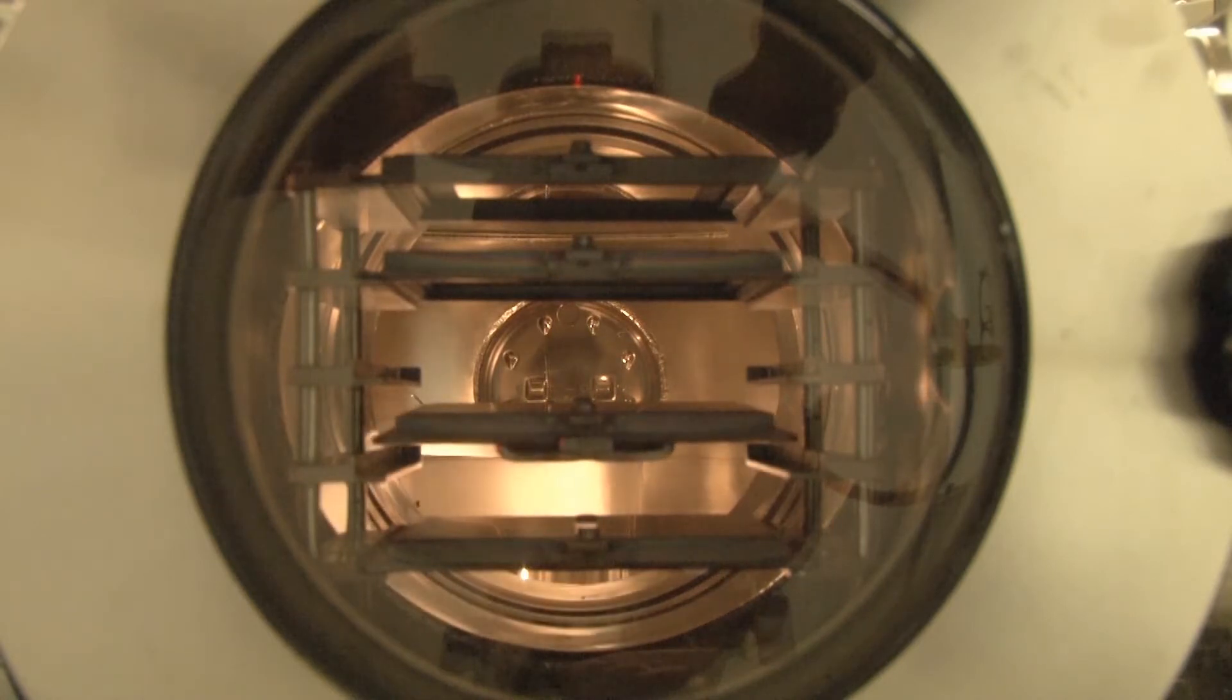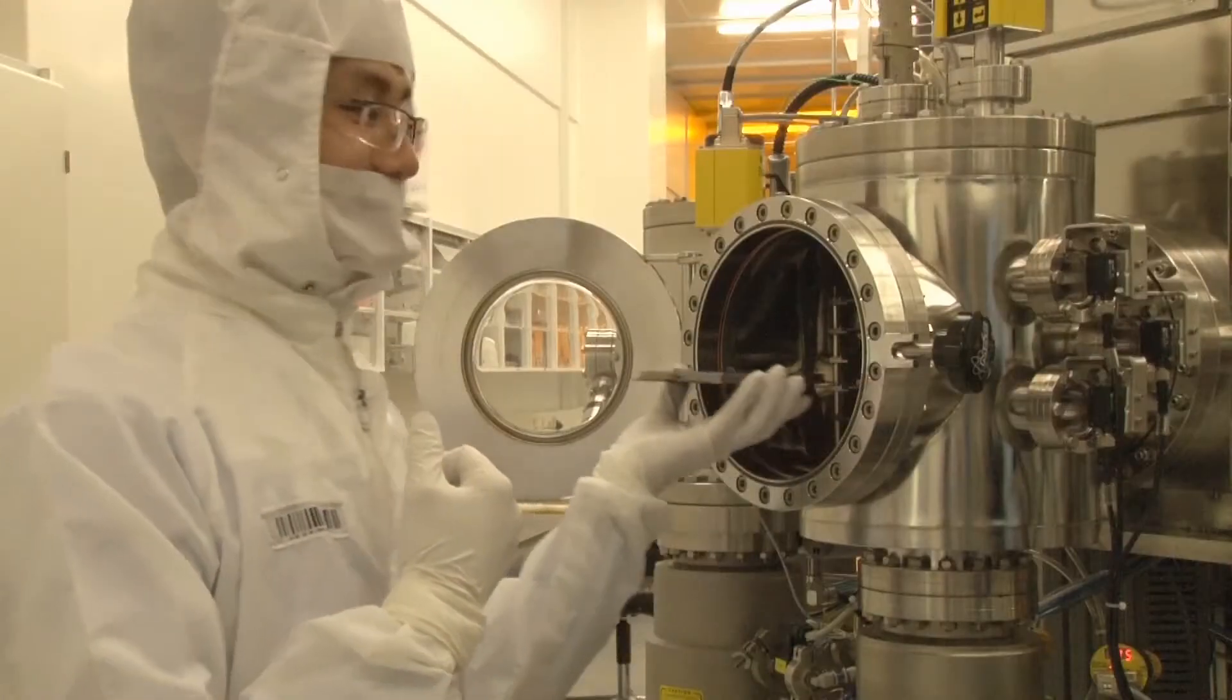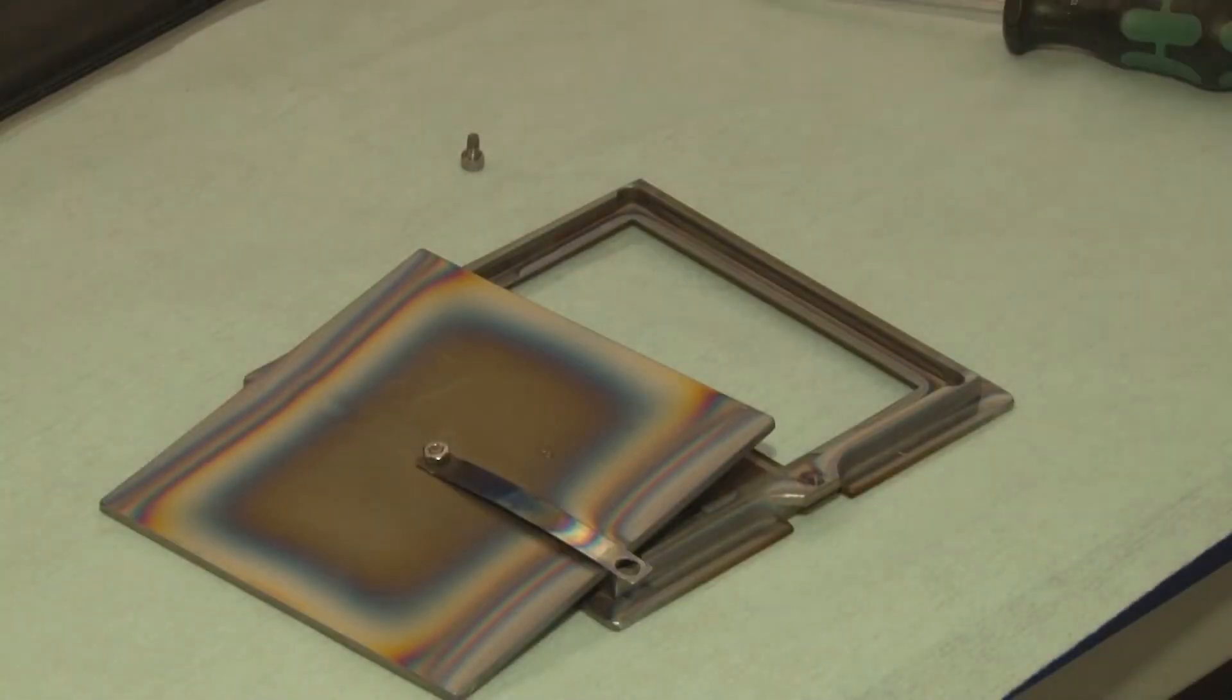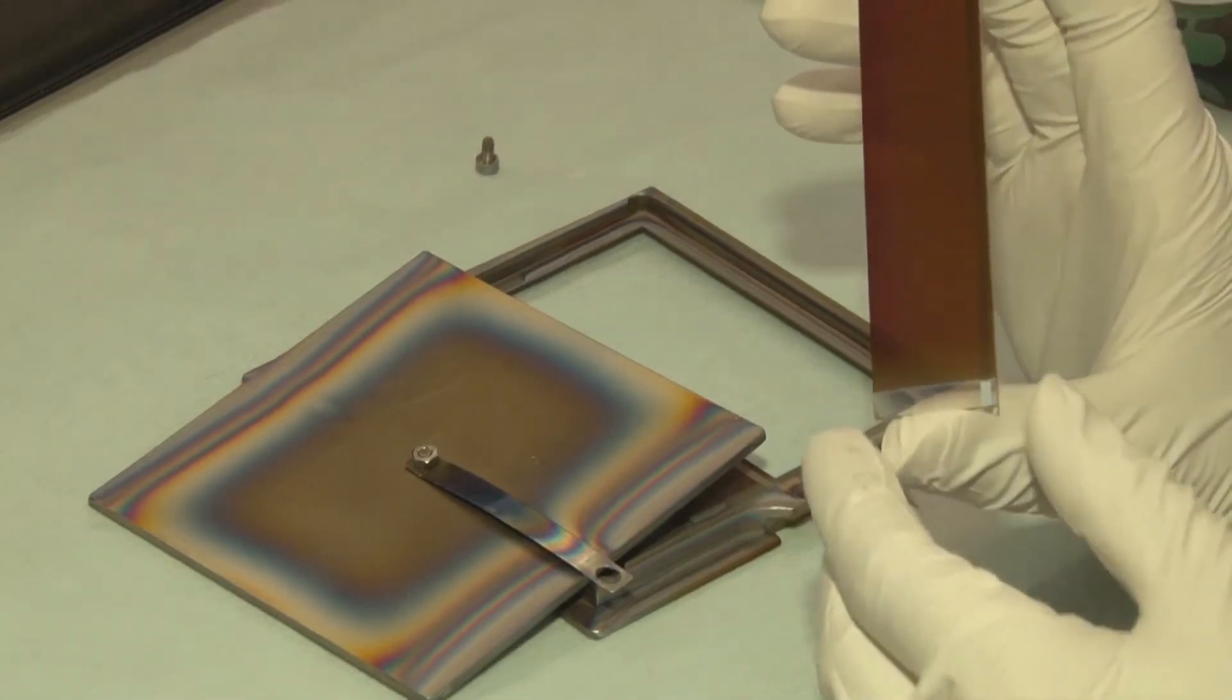The samples are moved from chamber to chamber through the load lock. After the various silicon deposition steps, the sample with the thin-film silicon P-I-N junction on top looks like this.